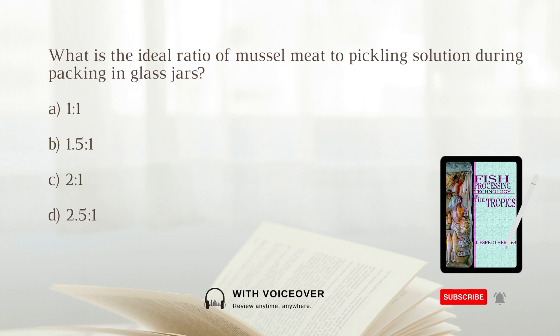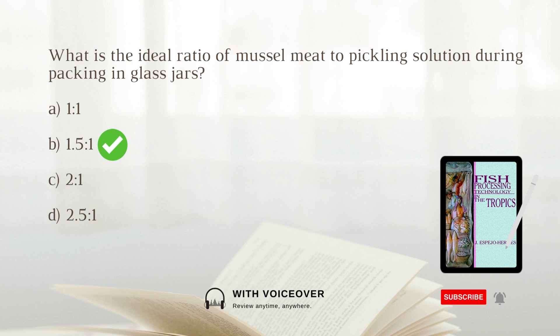What is the ideal ratio of mussel meat to pickling solution during packing in glass jars? A. 1:1. B. 1.5:1. C. 2:1. D. 2.5:1. Answer: B. 1.5:1.